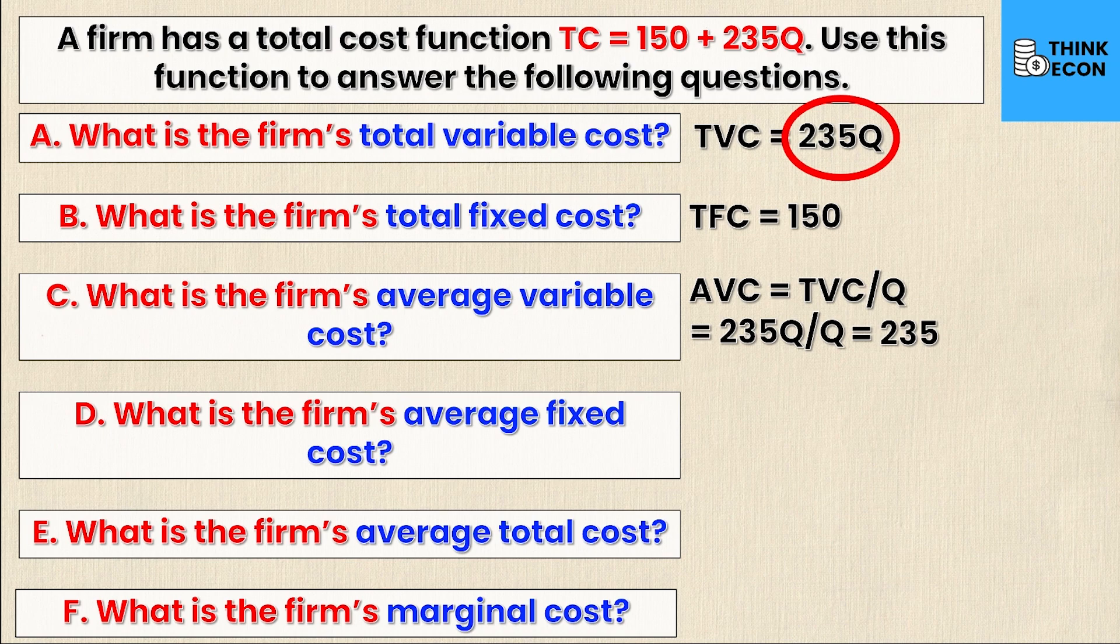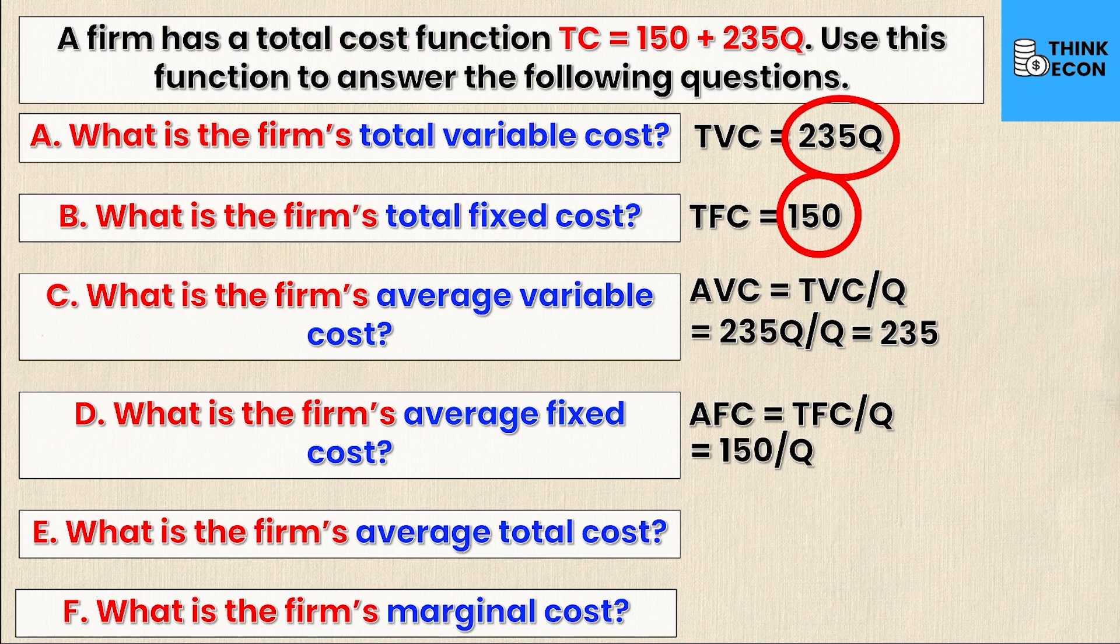What about part D, my average fixed cost? Well, similar to average variable cost, the average fixed cost is just total fixed cost divided by Q. And I know my total fixed cost is right here, it's 150 from part B. And if I substitute that in, I'll get 150 over Q. Now, because I don't know what Q is, this would be my final answer.